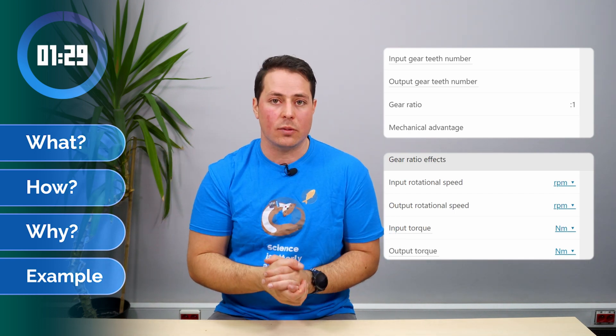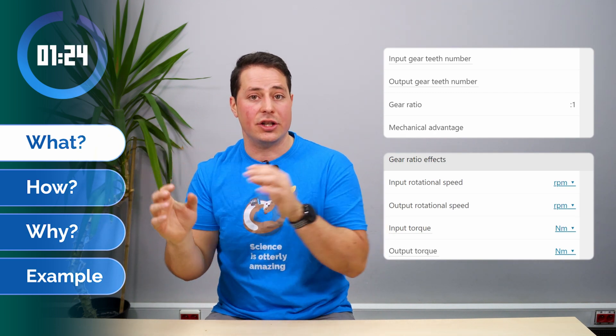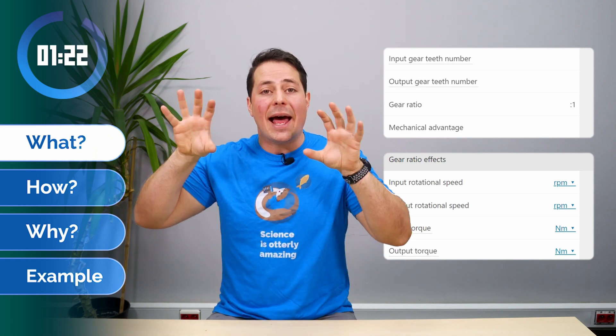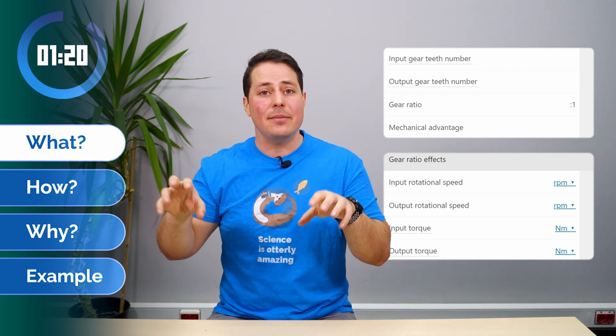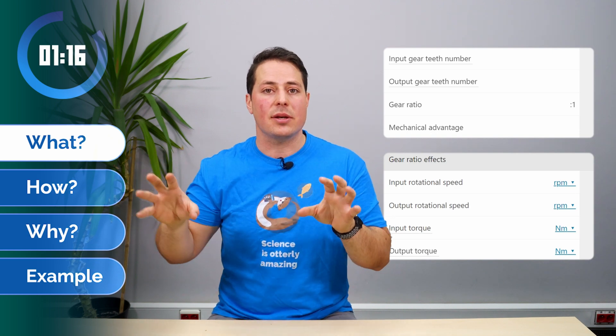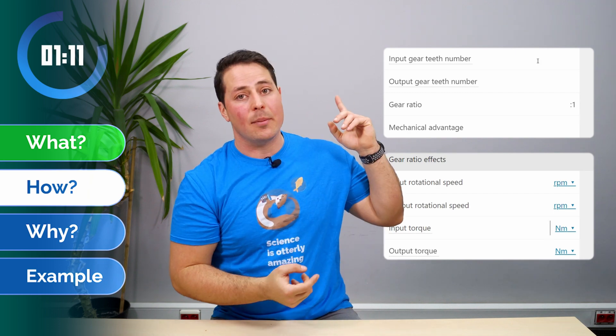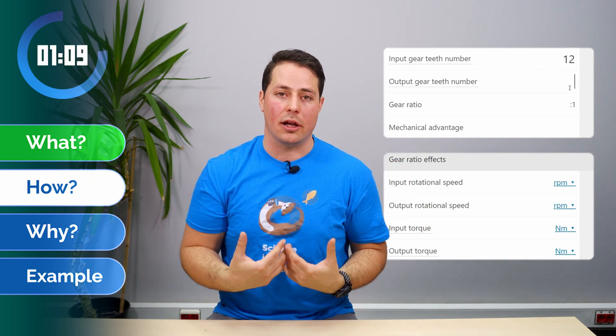Let's start with the what. When we have a two-gear system, one where we put the energy and another one where we get that energy—so input and output—unless the number of teeth in each gear is the same, their speed and torque will be different. This relationship is governed by the gear ratio, which you can calculate easily just by inputting the number of teeth of each gear into our calculator.